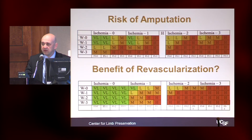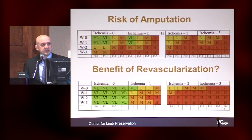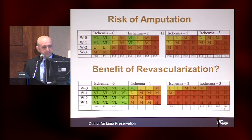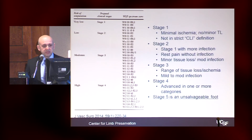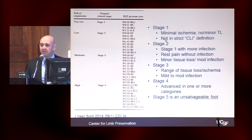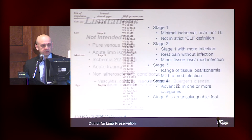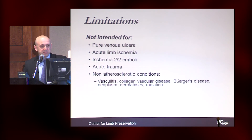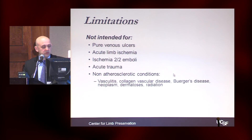A potential additional benefit of the WIfI classification is its ability to predict which patients are best suited for revascularization, though this is still in the process of being validated. Stage one is the lowest risk and stage four is the highest risk for amputation. Limitations of WIfI: it is not meant for venous ulcers, not for acute limb ischemia or ischemic or embolic phenomena, and not meant for acute trauma or non-atherosclerotic diseases like vasculitides.